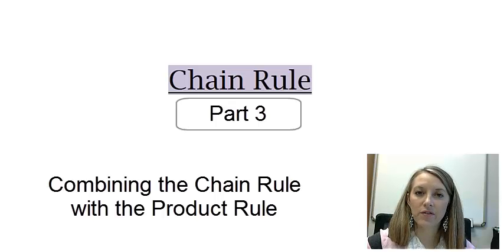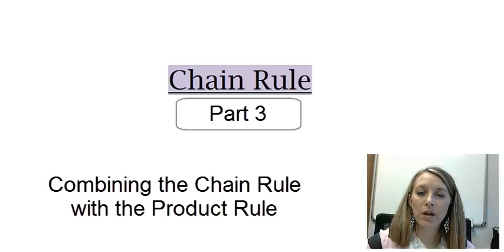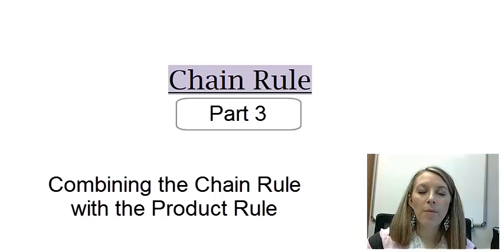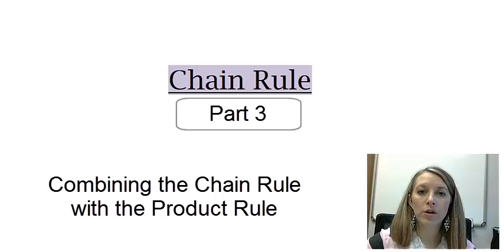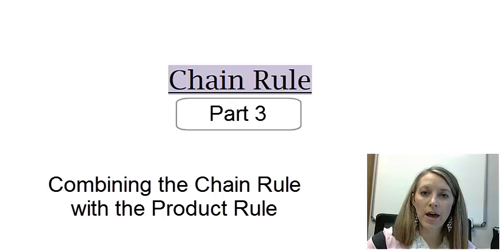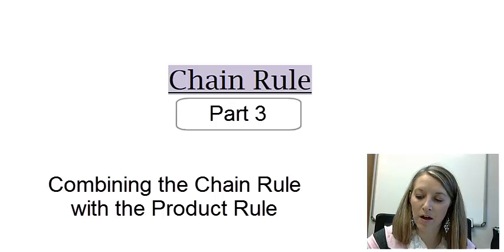Now that we have learned the last differentiation rule, it's time to put all of these rules together. You've been pretty good at combining the four shortcut rules with the product rule and the quotient rule, but how does it work when we have to combine two of the three larger rules, such as the chain rule with the product rule or the chain rule with the quotient rule? Let's go ahead and see our first example of this.